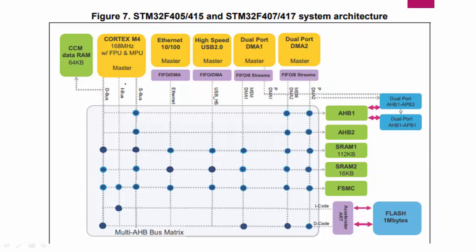Now let's check the I-bus. The bus matrix of this processor allows the master to use its I-bus to talk to only two different slaves — that is FSMC and the flash. That also means the bus matrix will not allow the I-bus to talk to SRAM1, SRAM2, the APB2 bus, or the APB1 bus. That privilege is not given.